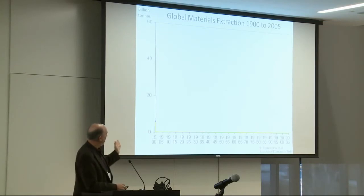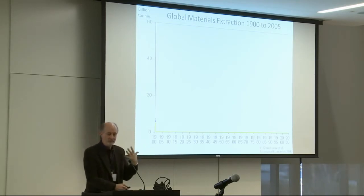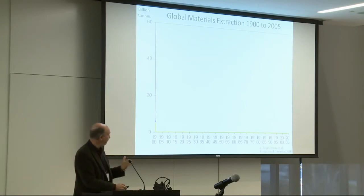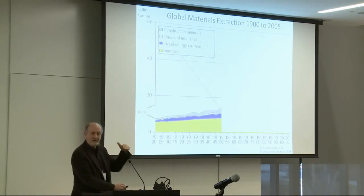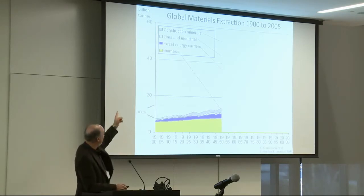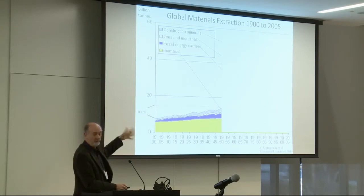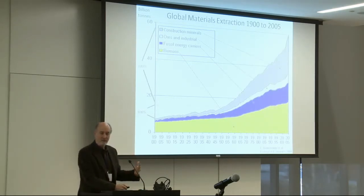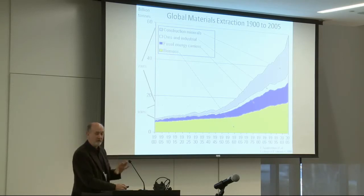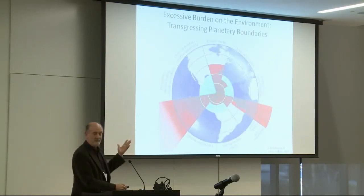Here's some data. This graph shows global materials extraction from 1900 to 2005 — all the materials drawn into the world's economies. In the first half of the 20th century there was a gentle, gradual increase in construction materials, ores, industrial materials, fossil energy carriers, and biomass. But in the second half of the 20th century up to 2005, there was an absolutely massive increase in the rate at which we're extracting resources from the environment. It's not surprising, therefore, that we're encountering planetary boundaries.